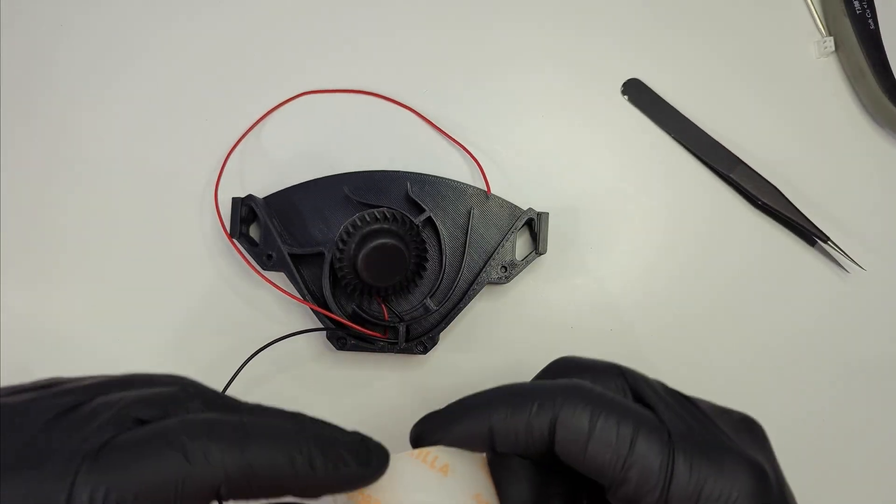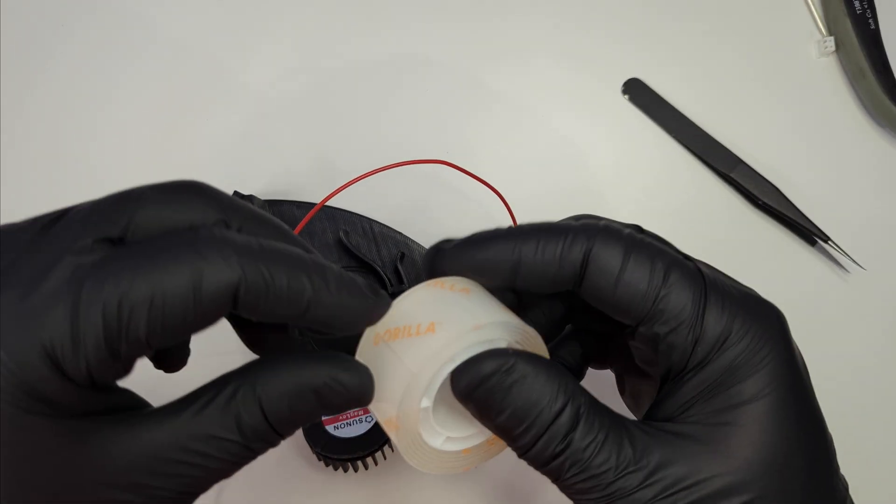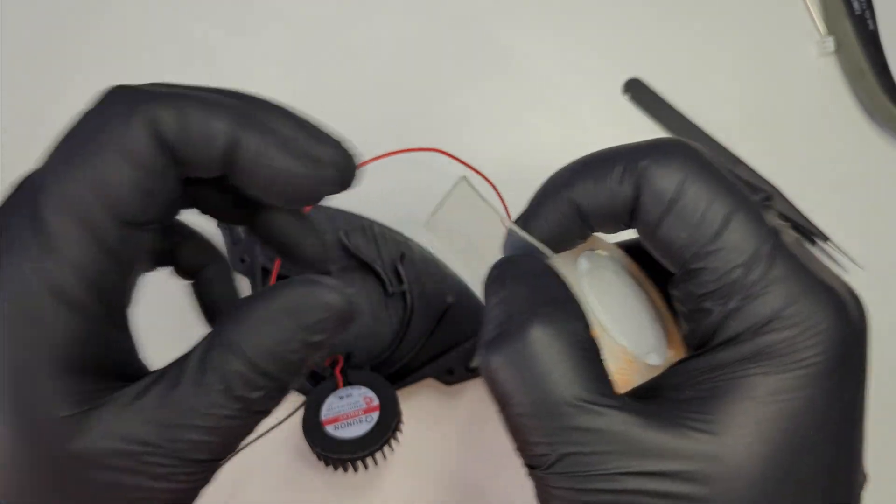Once you manage to feed the wires through, it is time to stick the fan to the plenum. I used double-sided tape which I believe is going to be good enough for this application.